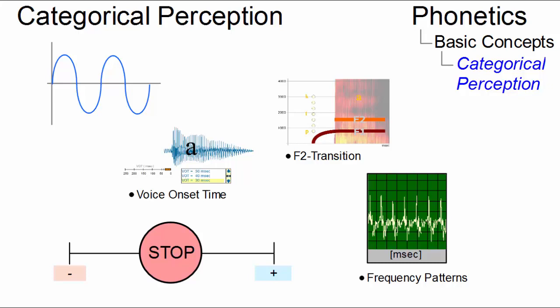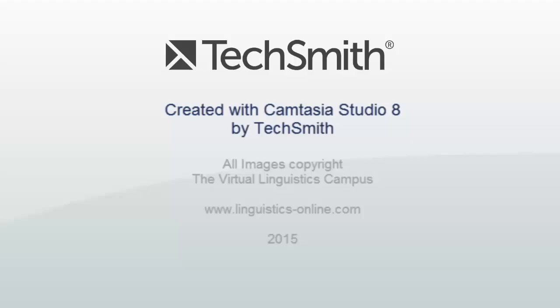Categorical perception is thus opposed to continuous perception, where sensory phenomena are not based on fixed tokens, but can be located on a smooth continuum.